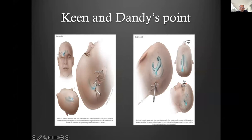Keen's and Dandy's points — I've moved away from these parietal approaches. Very often we get patients referred from other parts of the country with shunts placed there. A patient had a shunt placed ten years ago at Keen's point and it was still functioning. So as much as one argues this, you've got to be cognizant that there is no absolute correct way; most of us develop along the lines of how we were taught with minor variations.